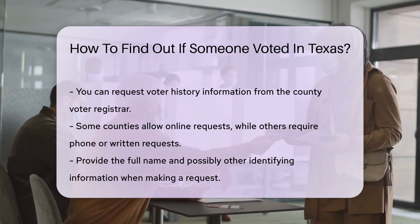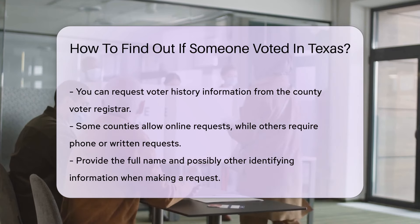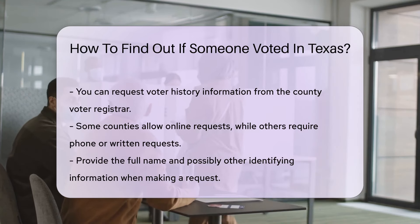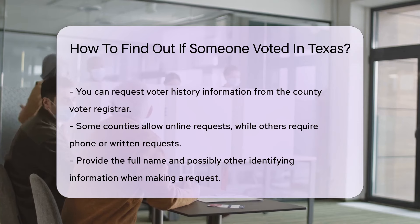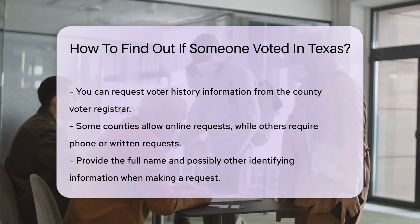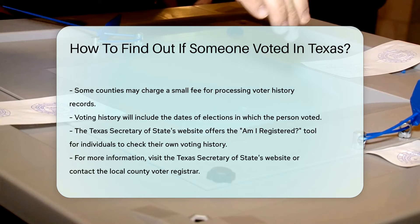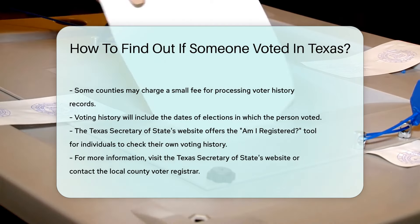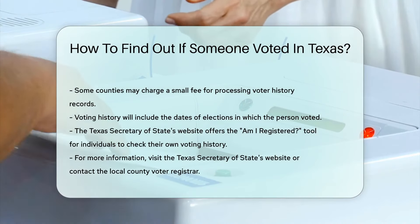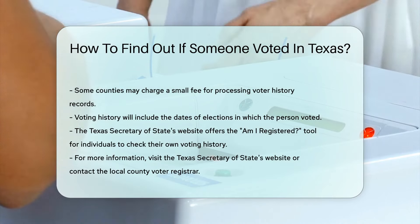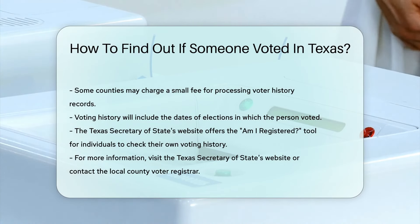If the person voted in recent elections, their voting history will include the dates of those elections. Remember, this information only shows if they voted, not their choices. The Texas Secretary of State's website also offers a tool called 'Am I Registered?' which allows individuals to check their own voter registration status and voting history.